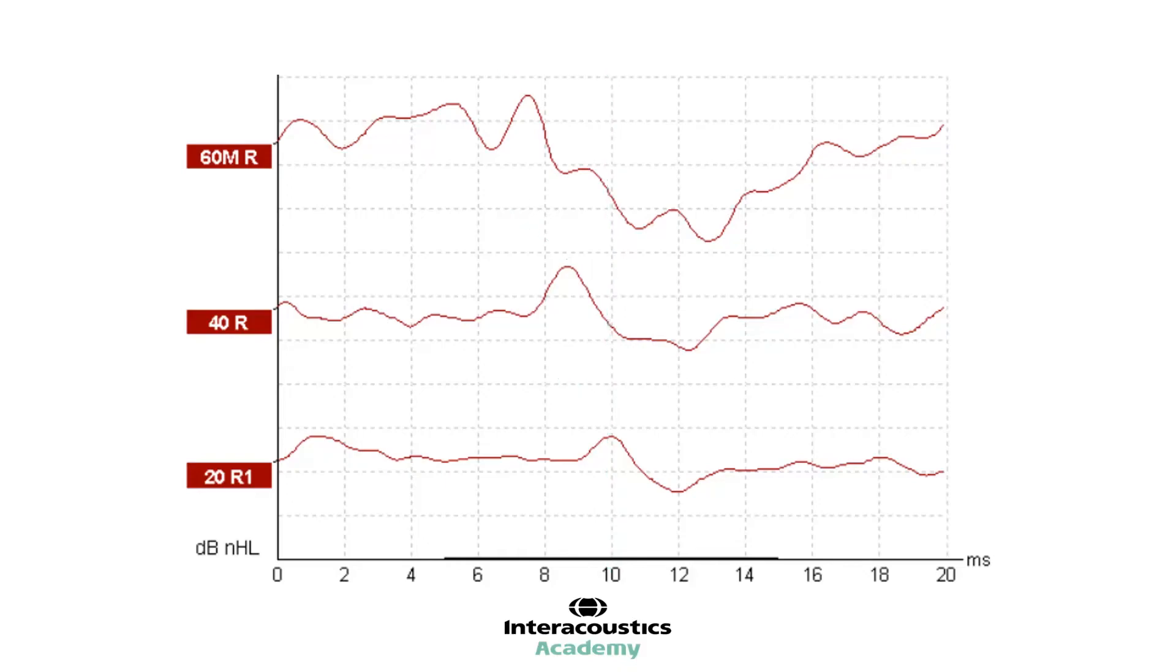We can also see the amplitude change in this example. At the level of 60, we can highlight wave 5 and the trough and measure the amplitude as the difference between them. By dropping to a quieter intensity of 40 dB, it is possible to see that the amplitude of this waveform is smaller than that recorded at 60. And with a further decrease to 20 dB, the waveform amplitude decreases further yet again. This demonstrates the expected decreasing amplitude change as a function of decreasing intensity level.